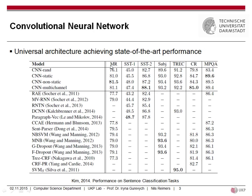He trained CNNs on different datasets: MR are movie reviews (positive/negative), then the Stanford Sentiment Treebank — fine-grained and coarse-grained — plus others on subjectivity and TREC question classification. It achieves quite good performance: for example, 81 F-measure on sentiment classification on movie reviews, 48 on the fine-grained Stanford Sentiment Treebank, and 87 on the coarse-grained (positive or negative only). Last week we covered the recursive autoencoder by Socher, which achieves 77% on the Stanford Sentiment Treebank.